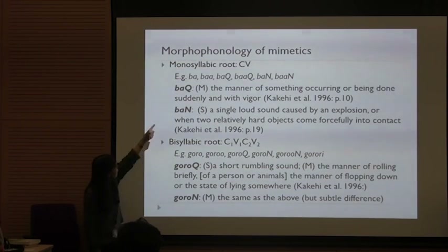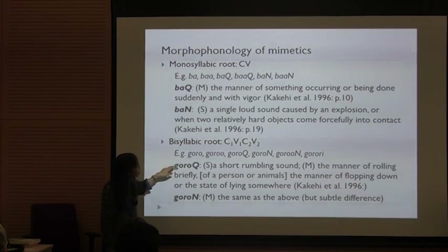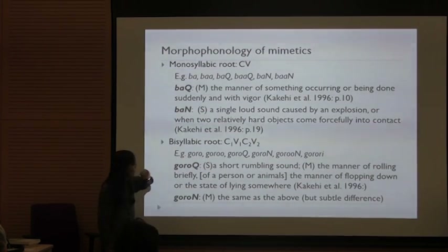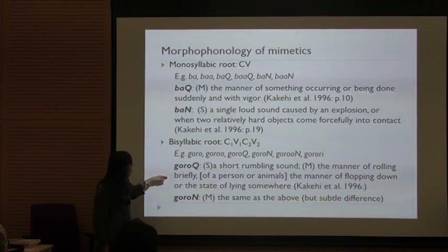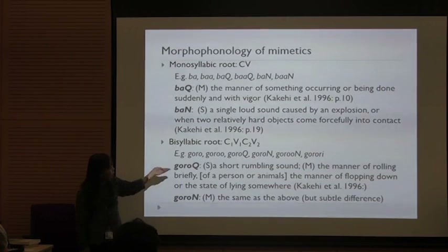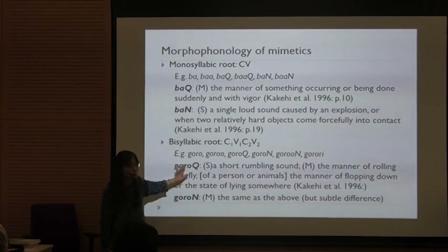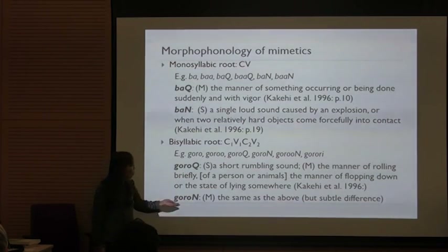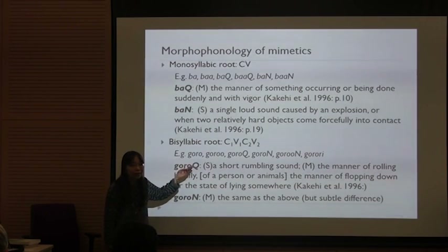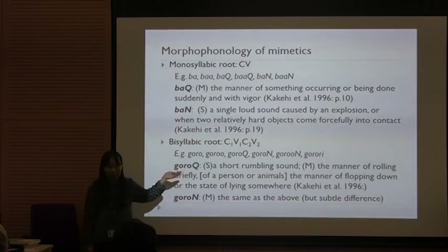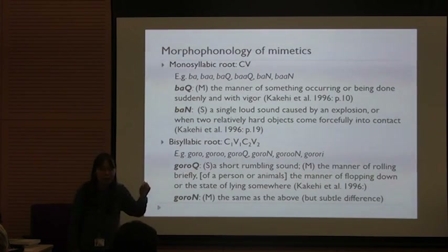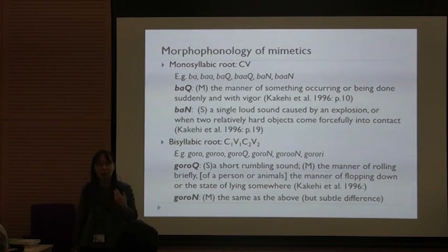The root BA is a CV-V root. On the other hand, there are also roots with two syllables — or two moras. GORO is a short, rambling sound, or the manner of rolling briefly, just briefly, because it's short. GORON on the other hand — although in the dictionary they didn't bother to distinguish between these two — if you are a Japanese speaker, you might sense a bit of difference: GORON has more of a lingering quality.